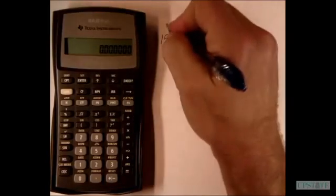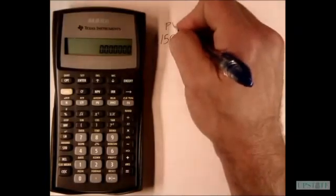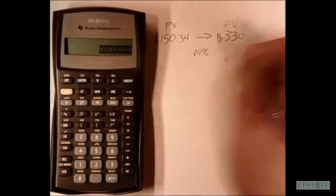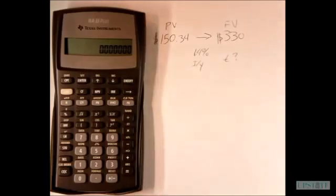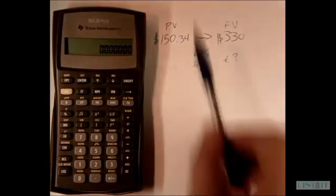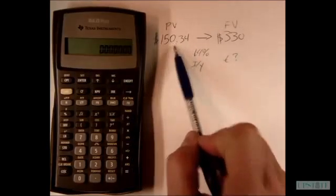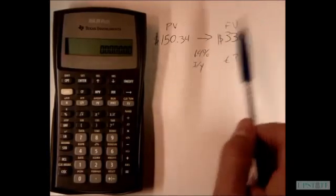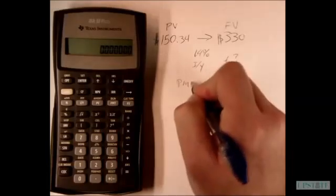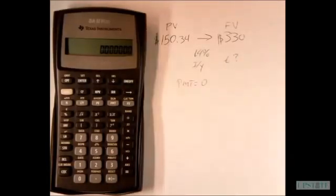We know that this $150.34 is our present value, this $330 is our future value, this interest rate is going to be i over y. Since we're just putting in a value into an account now and waiting to see what it's worth in a few years, we're not going to have any payments, so our payment is going to be zero.